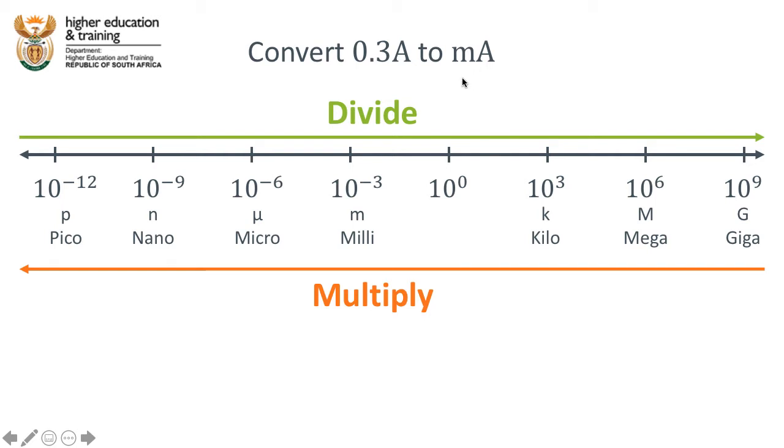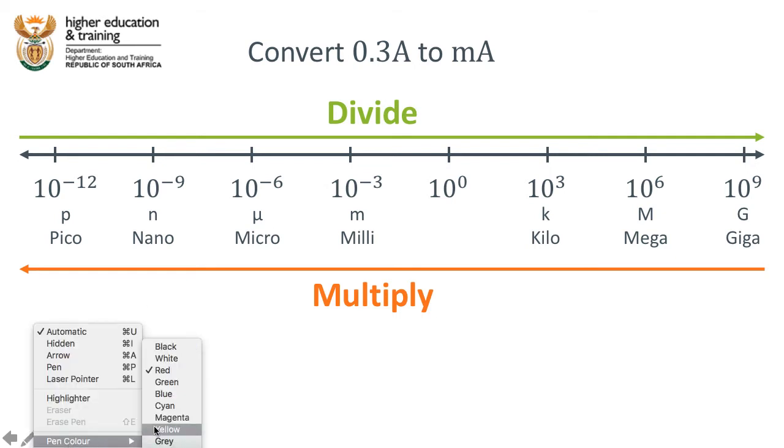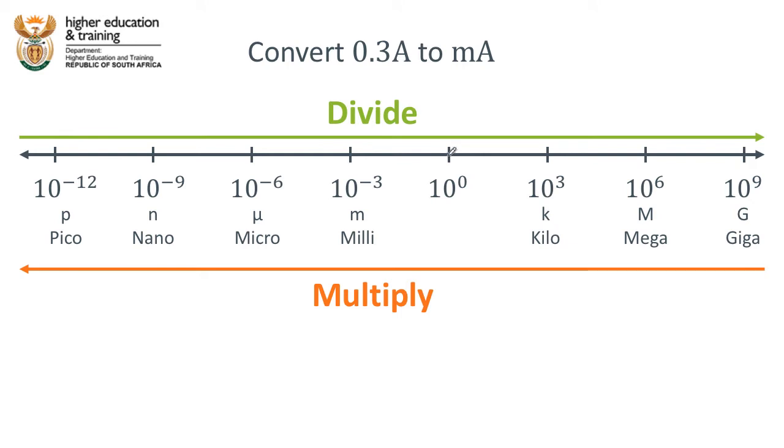But in case you weren't able to do it without the number line, let's go through it with the number line. Okay, so we know that we're moving from the units of amps to milliamps, so we're moving from this point of the number line to this point on the number line.